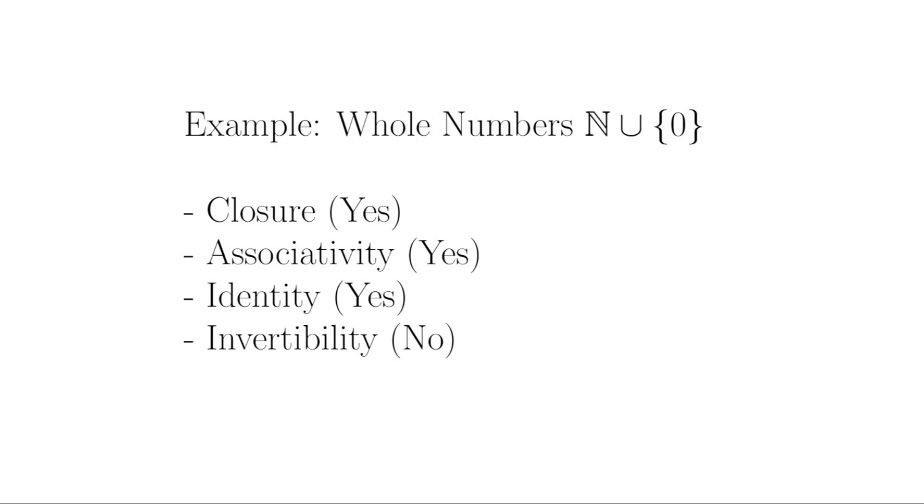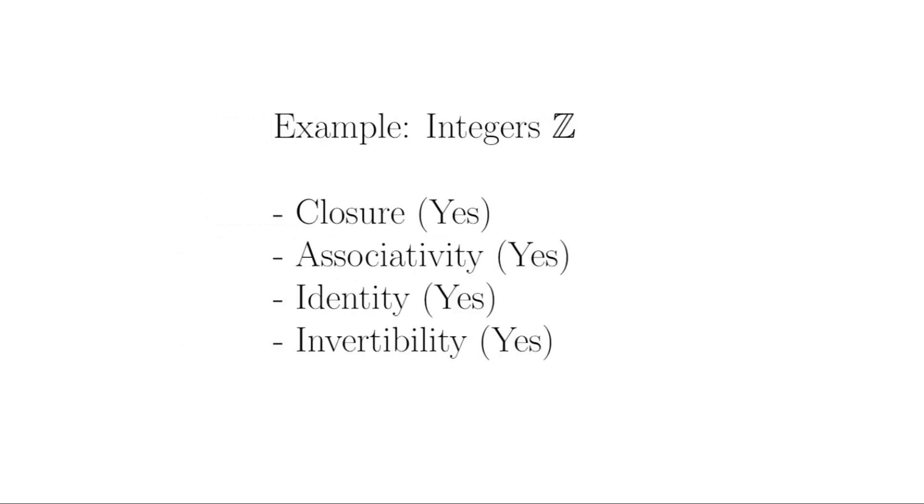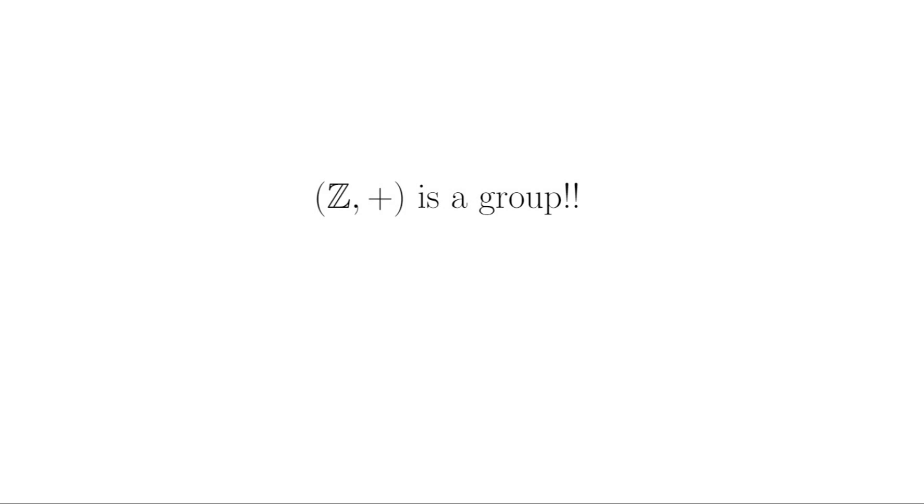And lastly, does our new set of whole numbers satisfy invertibility? No. None of the positive integers has an additive inverse in the whole numbers. So to satisfy invertibility, we would need to add in all the negative integers as well. So what did we just do? Well, we just created Z, which is a group under regular addition and the smallest group that contains the natural numbers.